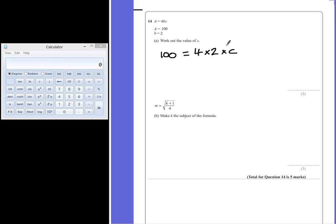To work out the value of C, we're going to divide by the number that's multiplying C. In this case, 4 times 2, which is 8. So if we divide by 8, we have 100 divided by 8 equals C, and therefore C equals 12.5.